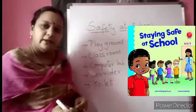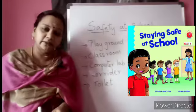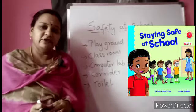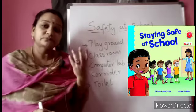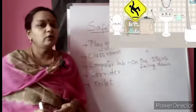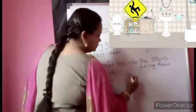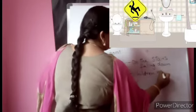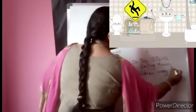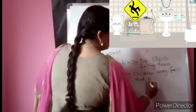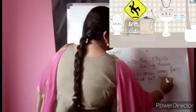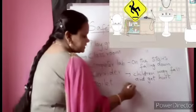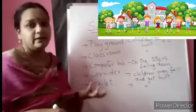And what about the toilet? Any time, an accident may occur there too. We already learnt about the wet floor in the safety at home lesson. Here also there is a possibility of getting hurt. In the corridor, children may fall and get hurt. And even in the toilet, the same thing can happen — children may fall and get hurt.